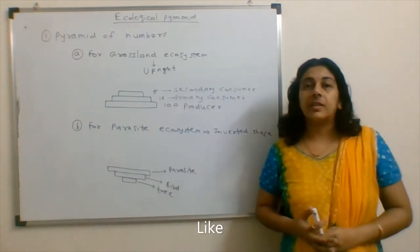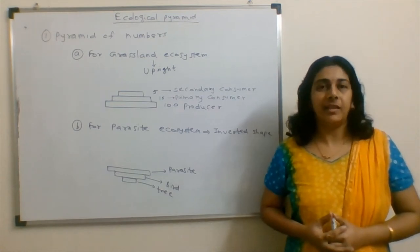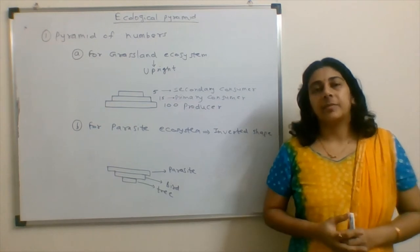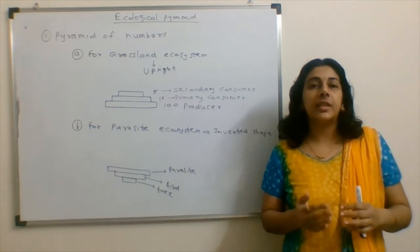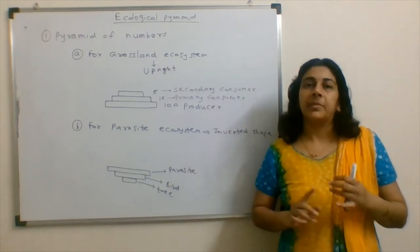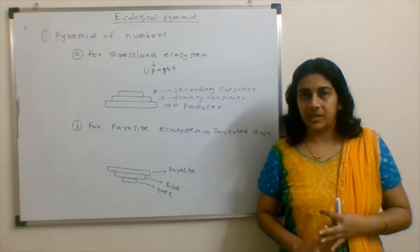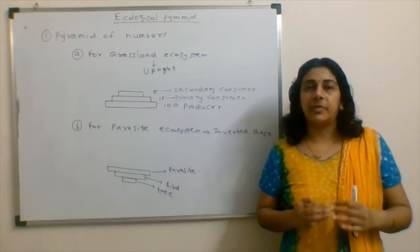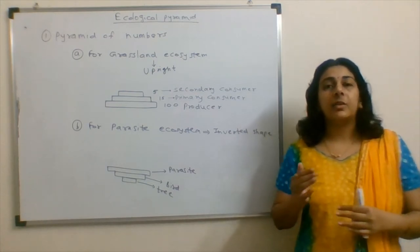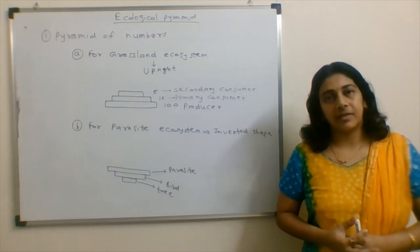To understand this question, we must have an idea what are the pyramids in our ecology. You know what is pyramid shape. There are three types of pyramids in ecology: pyramid of number, pyramid of biomass, and pyramid of energy. Now we will have a look at how these three types of pyramids occur in the ecosystems.